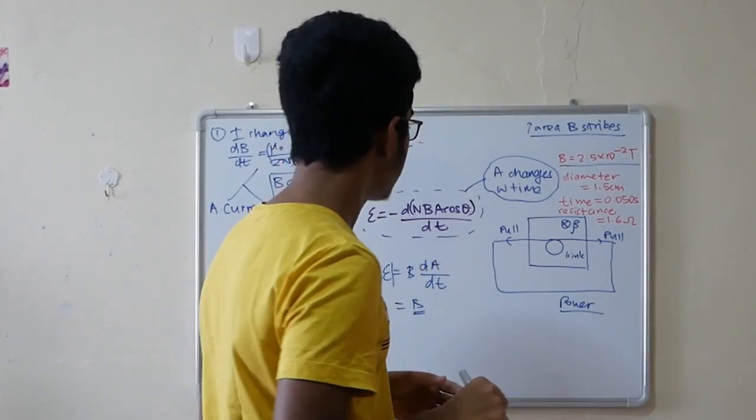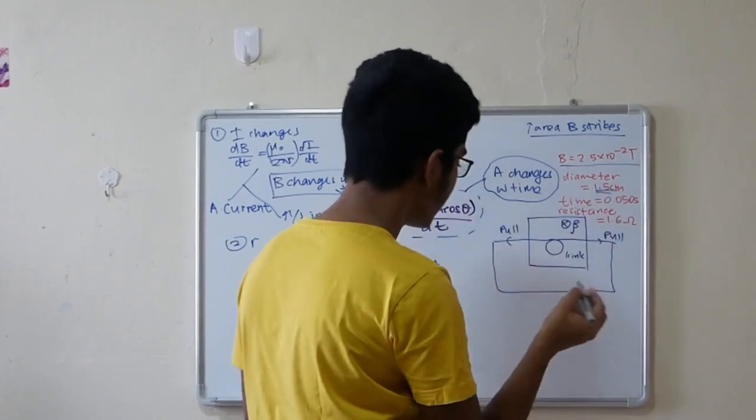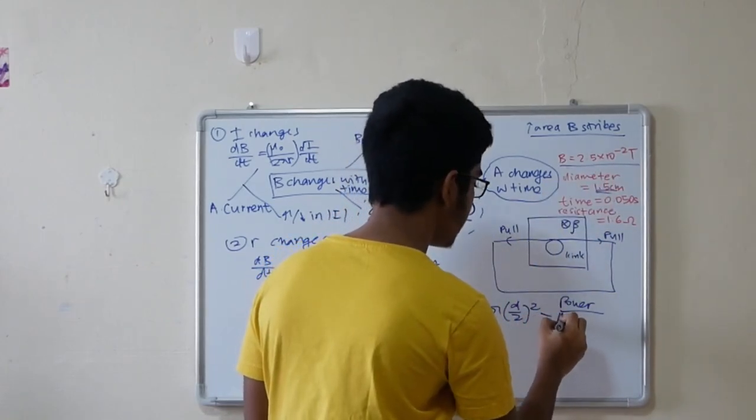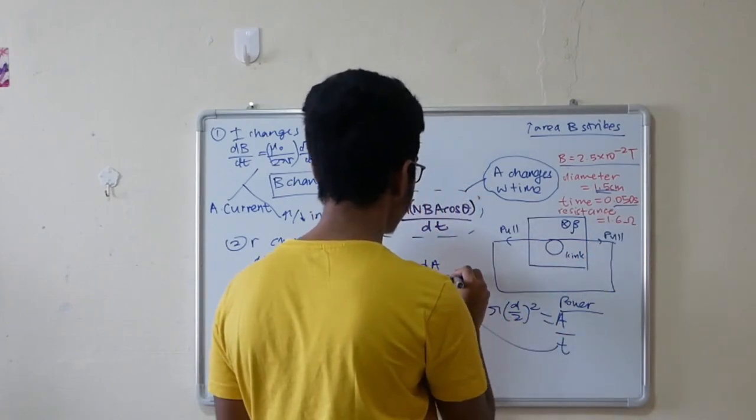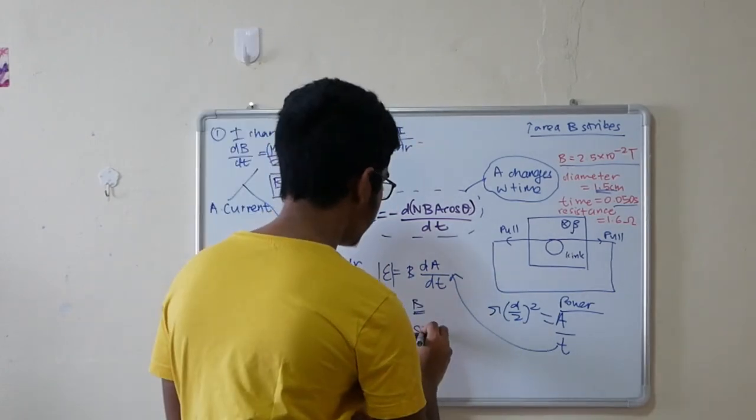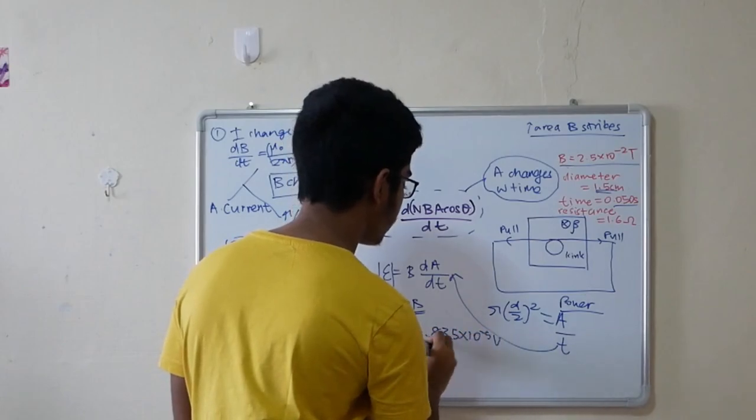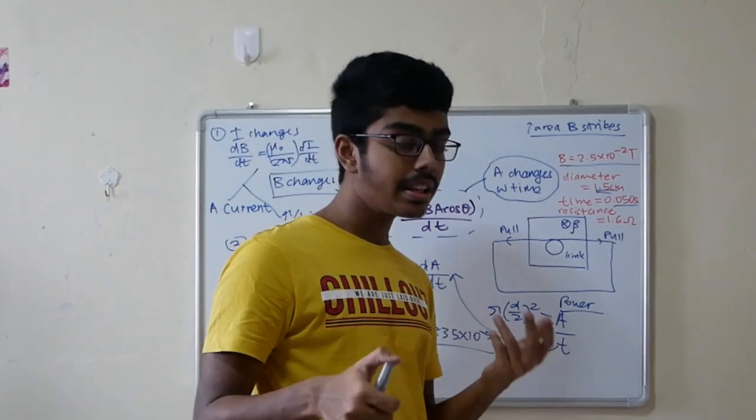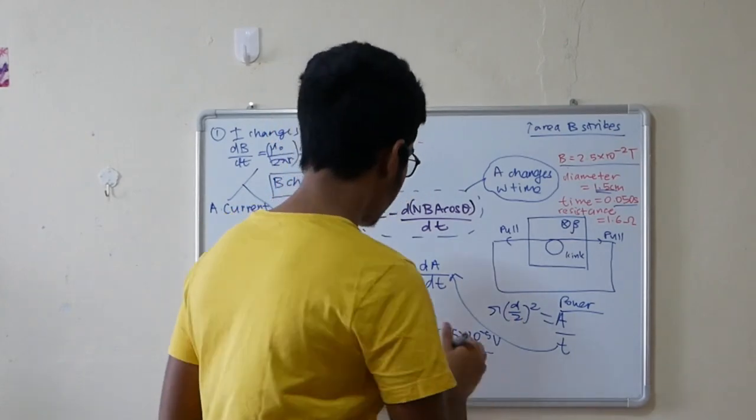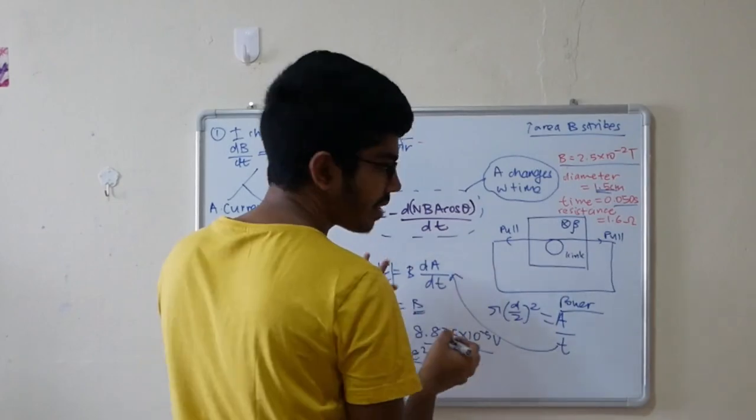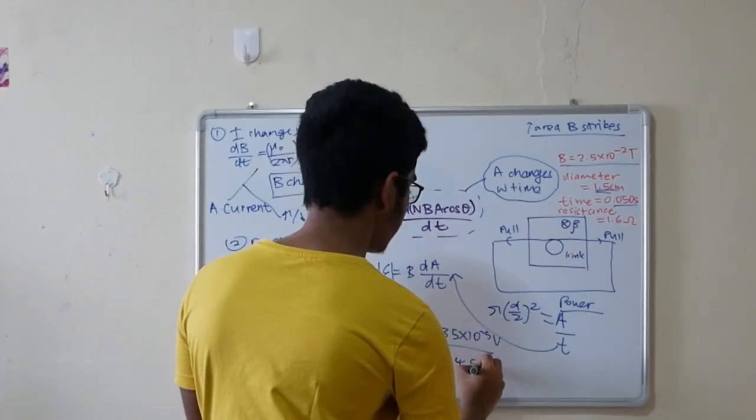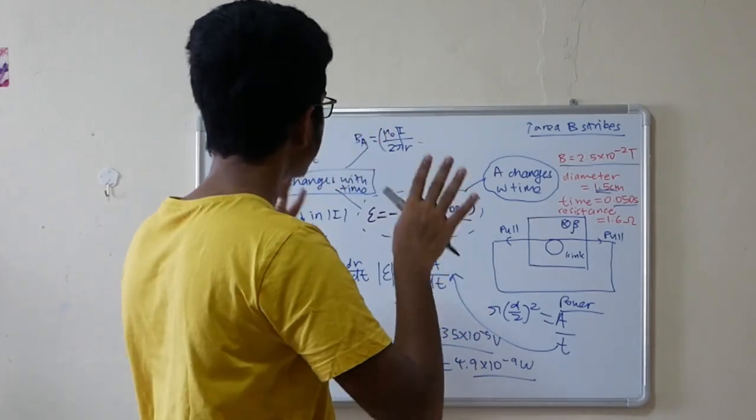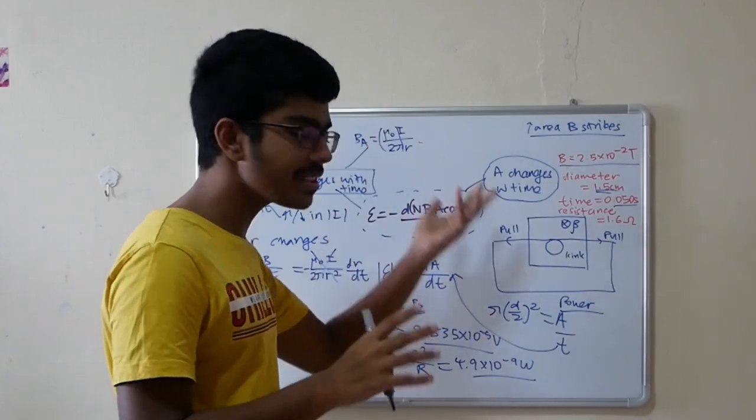B is constant, so you pull out the B. Now area, how does the area change? You take the total area, you got a diameter, so you use π(d/2)² and you substitute in the diameter. You will get the area. You got the time interval as well, so you divide by t, you substitute in and you'll get an EMF of 8.835 times 10⁻⁵ volts. From now, what is the power generated? It's not related to this topic. P equals V² over R. In this case, just use E². So it doesn't matter if it's negative or positive and you will get 4.9 times 10⁻⁹ watts. So when you face a new challenging question, always think of what is the change? Is it the area or the B field?